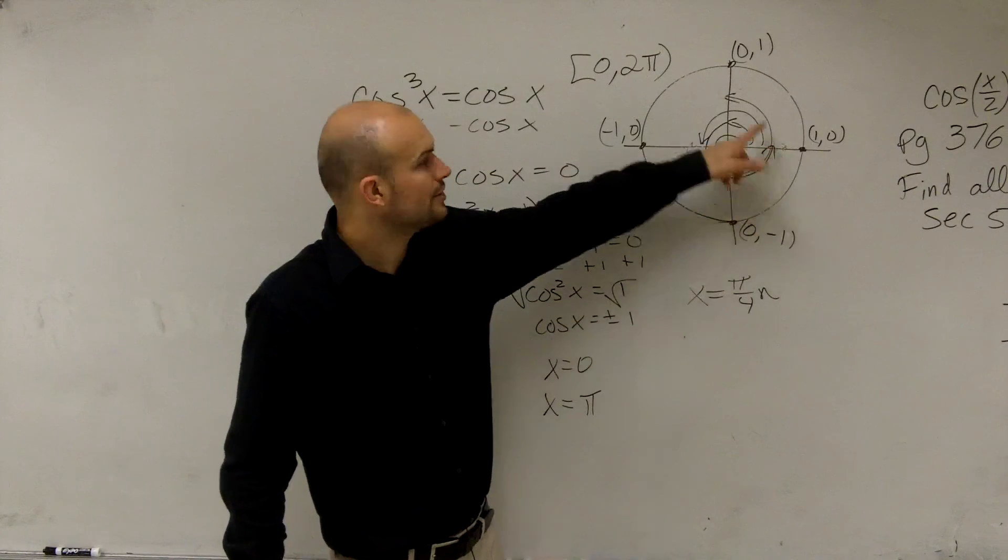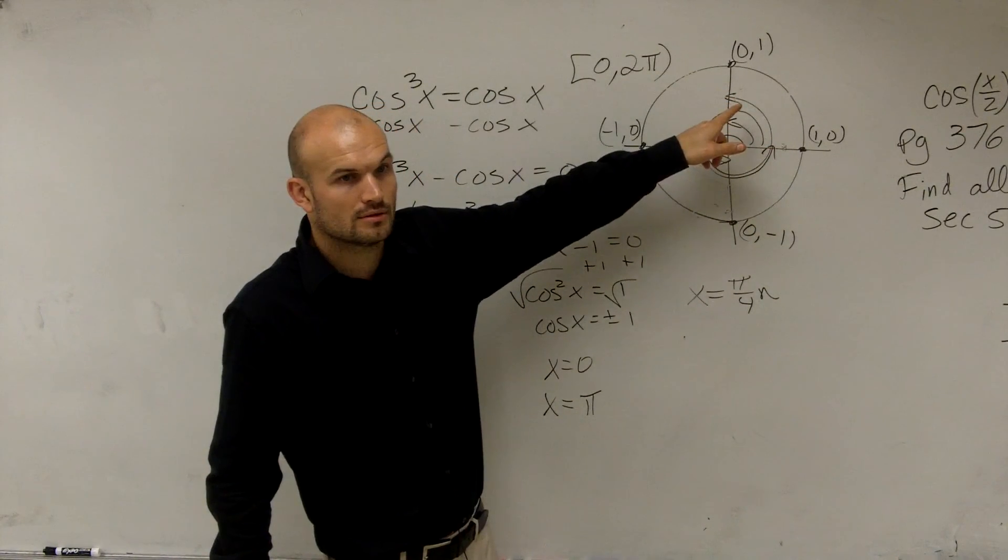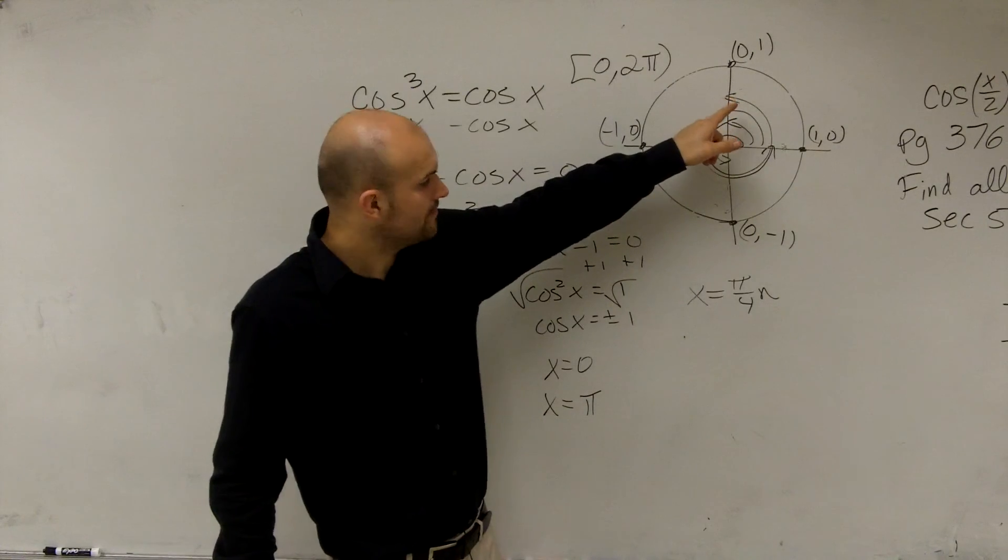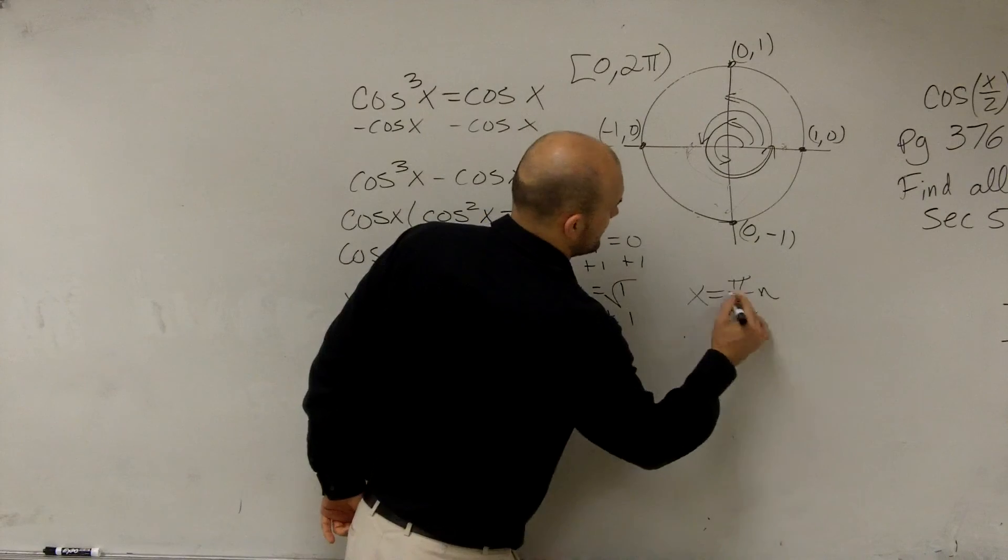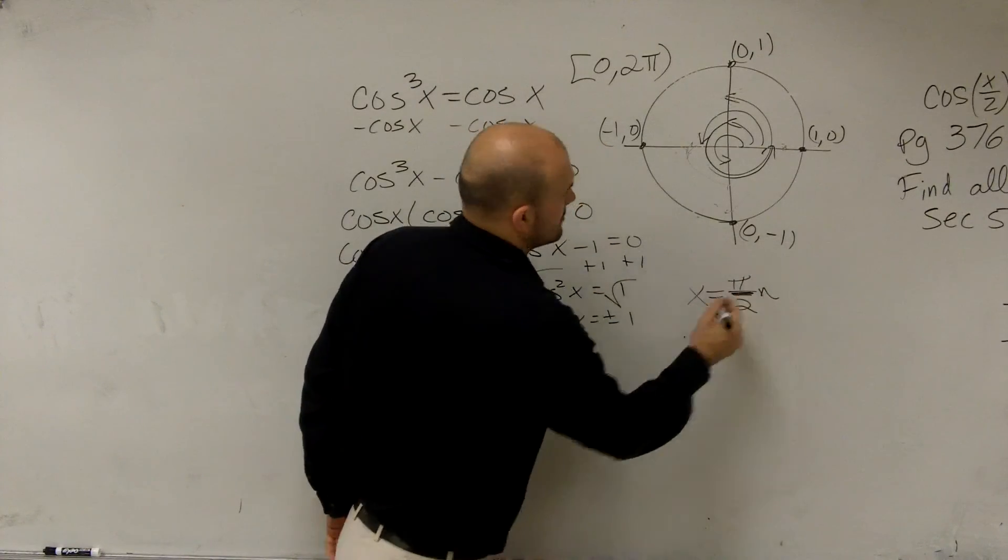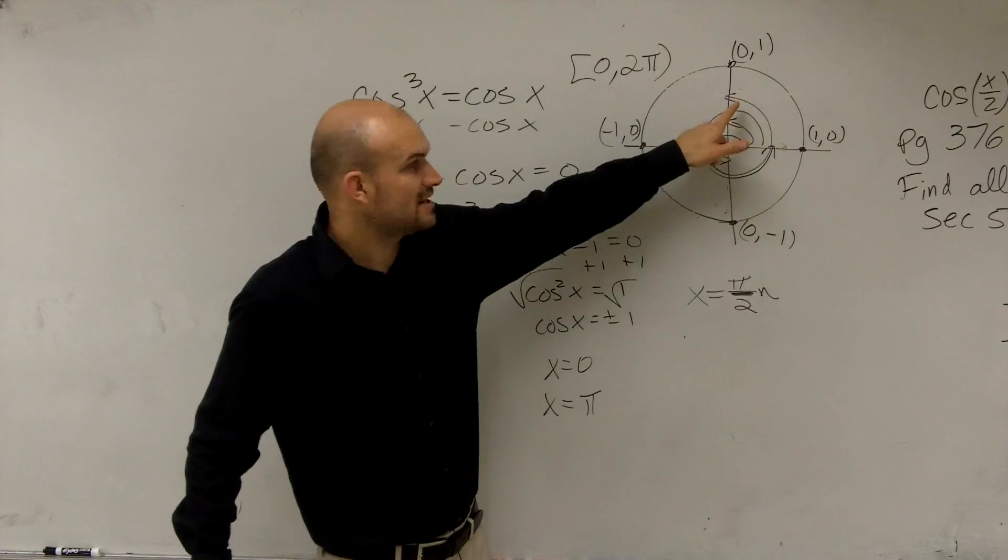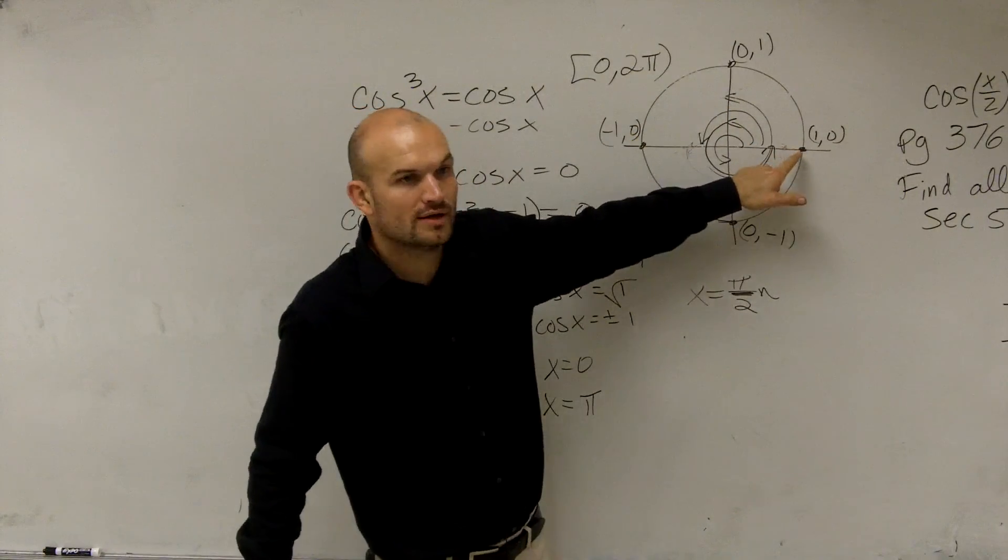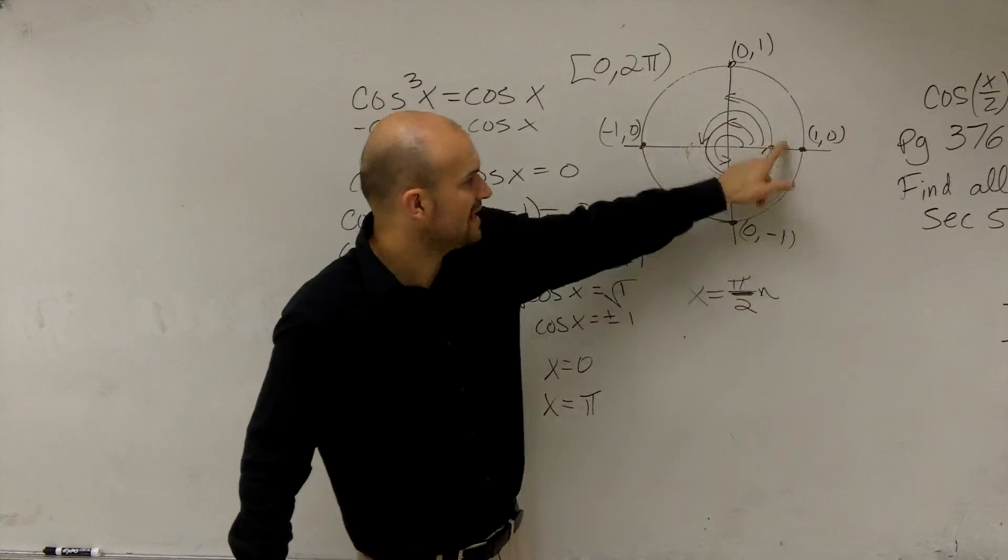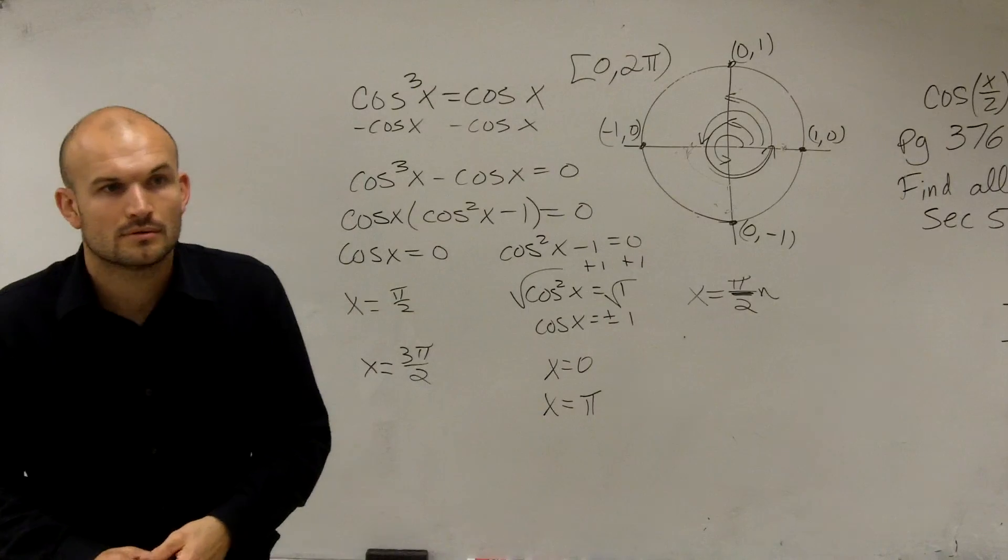If you multiply n times 1, you're at this solution. Sorry, not π/4, π/2. If you multiply π/2 times n, you get to here. If you multiply it by 2, you get to here. Multiply it by 3, you get here. Multiply it by 4, here. 5, 6, 7, 8, 9, 10. You can do it infinitely many times for the graph.